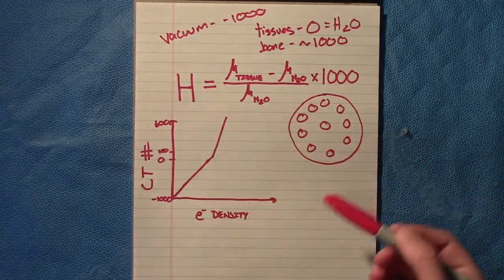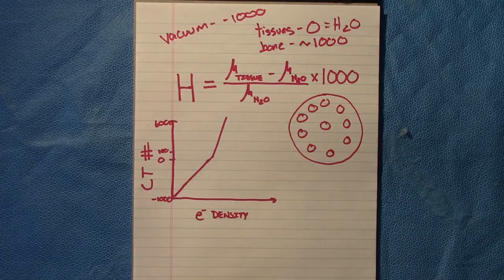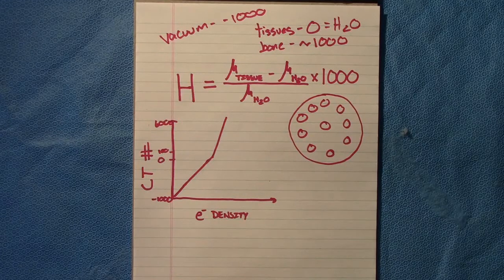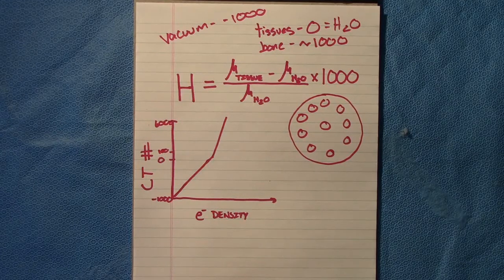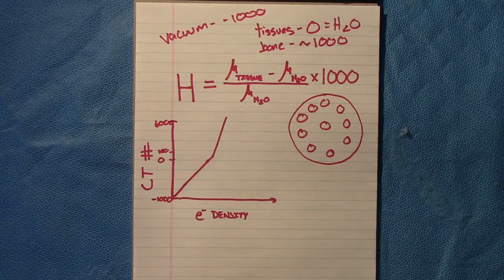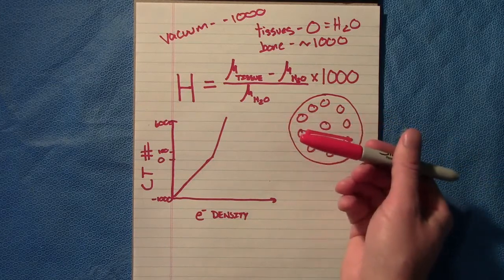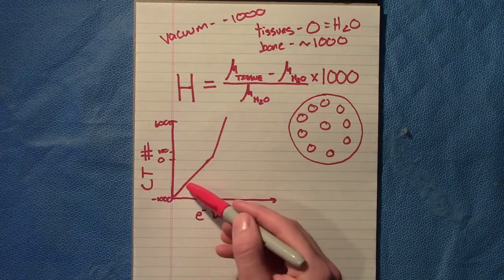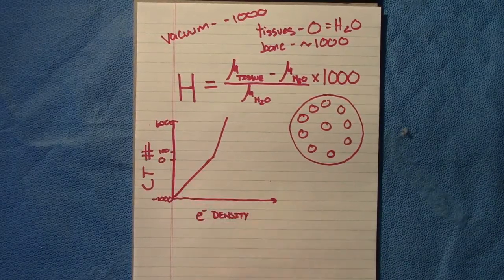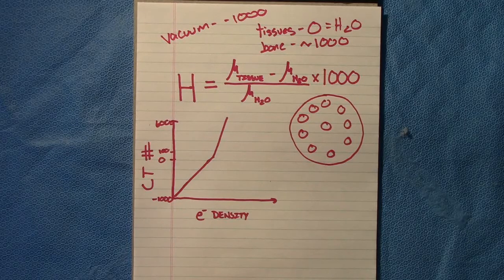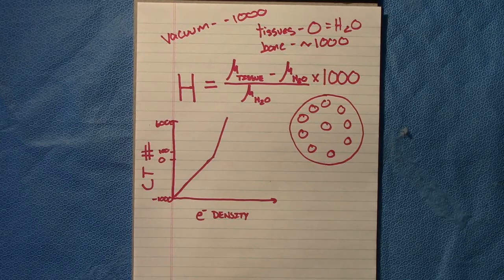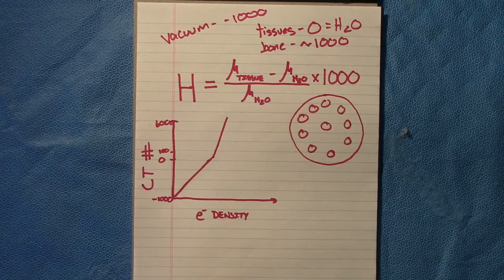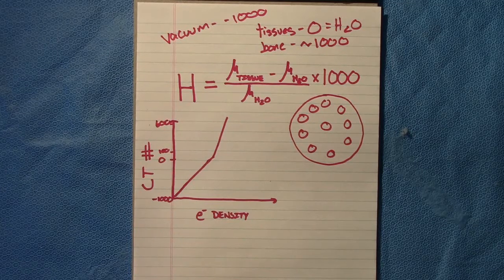In our treatment planning system, we are going to put this graph into whether it's BrainLab or Eclipse or Pinnacle, whatever system we're using. That is going to look at the structure, that CT, and what that beam is going through. It's going to say, 'Okay, I'm going through lung. Lung has this CT number. This CT number has this electron density.' It's then going to use that electron density to help with the probability of Compton interactions and overall account for the heterogeneity correction for that plan and that CT specifically.